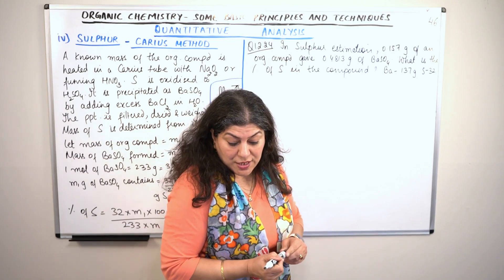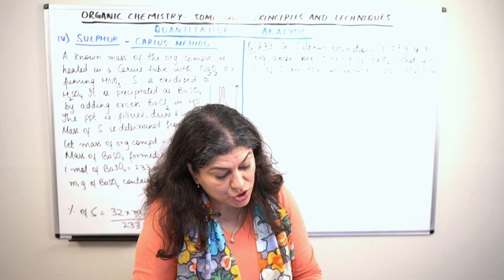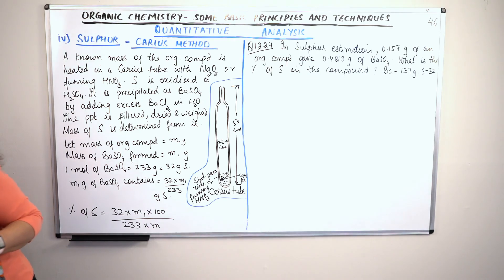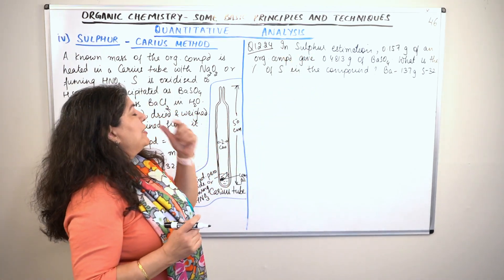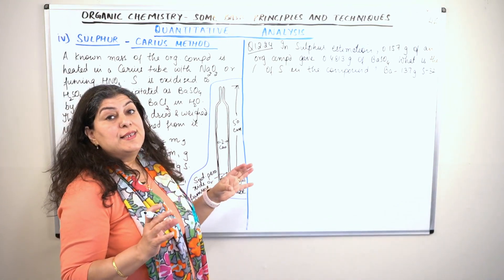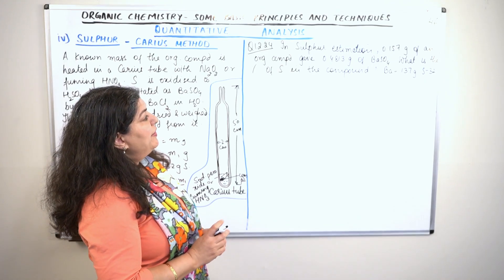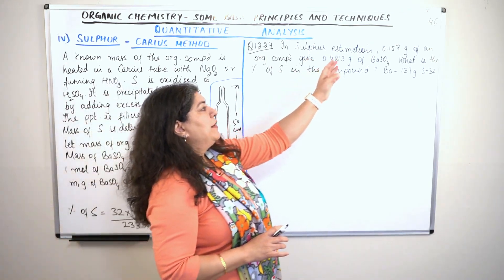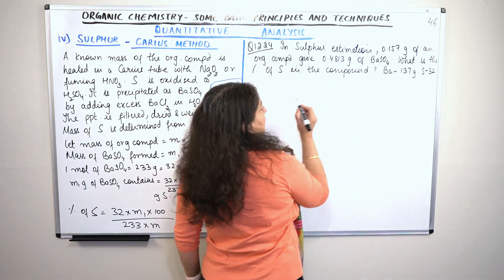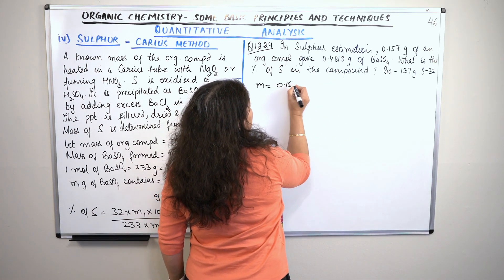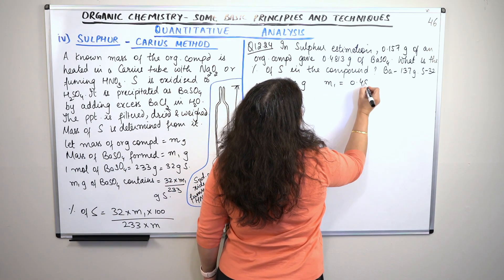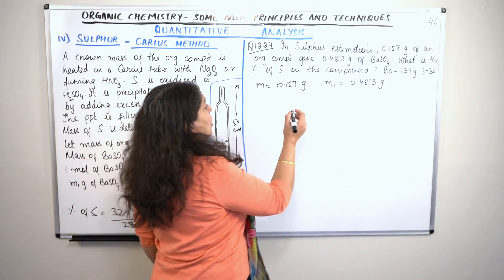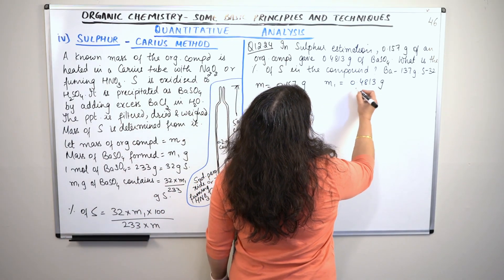After sulfur, we will also cover the estimation of phosphorus and oxygen, but for those we won't go into detailed calculations as the method will be straightforward by then. Let me now solve the example given in your textbook. Question 12.24: In sulfur estimation, 0.157 grams of an organic compound gave 0.4813 grams of barium sulfate. So here m = 0.157 g and m1 = 0.4813 g. What is the percentage of sulfur in the compound?